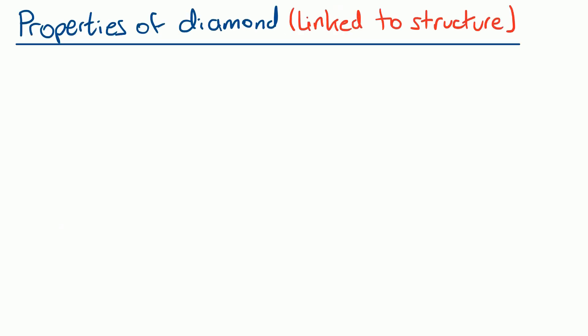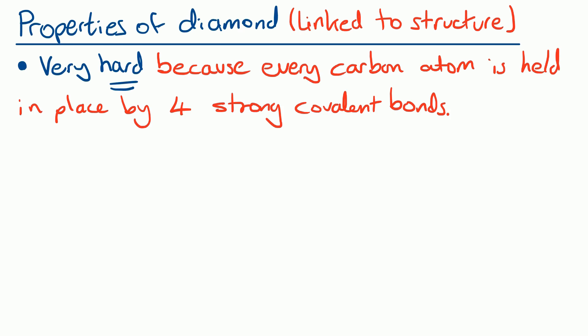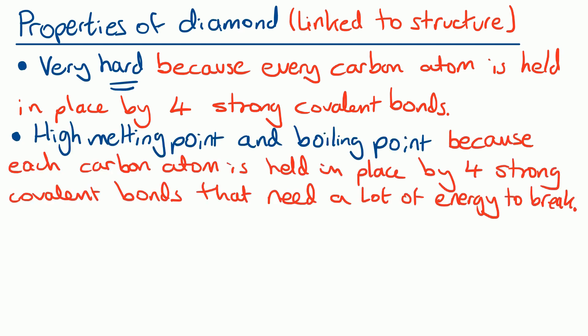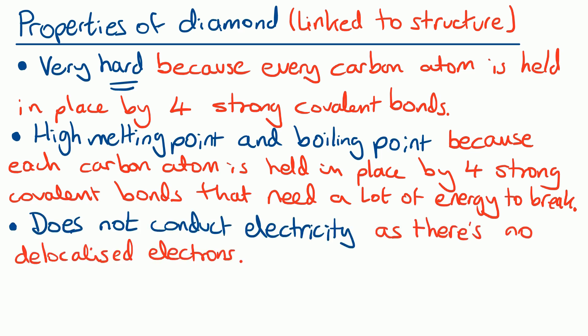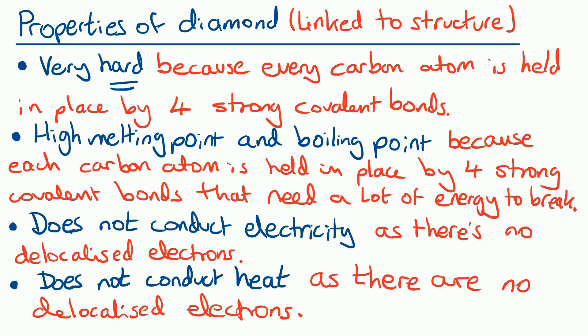Let's now try to explain the properties of diamond by talking about its structure. Properties are what you can say about a substance; the structure is how the atoms are joined together and arranged. First of all, diamond is very hard — not strong, but hard — one of the hardest natural substances on Earth, because every carbon atom is held in place by four strong covalent bonds. It's got a high melting point and boiling point, once again because each carbon atom is held in place by four strong covalent bonds and they need a lot of energy to break those bonds. It doesn't conduct electricity or heat because there are no delocalized electrons. Make sure you can remember these four properties and the reason why diamond has them.